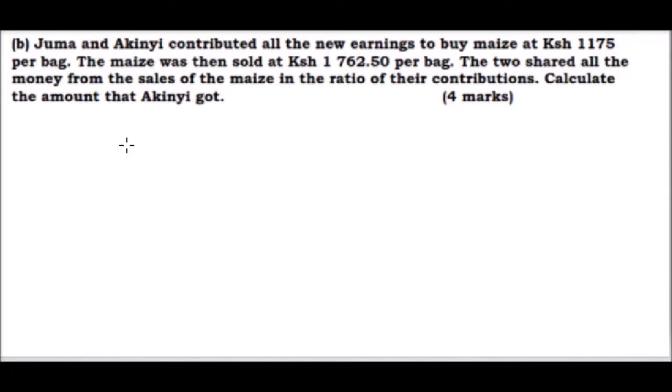Question number 21 part B. You are told Juma and Akinyi contributed all the new earnings to buy maize at 1175 Kenyan shillings per bag. The maize was then sold at Ksh 1762.50 per bag. The two shared all the money from the sales of maize in the ratio of their contributions. Calculate the amount that Akinyi got.